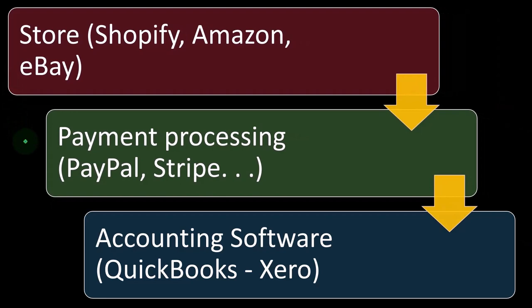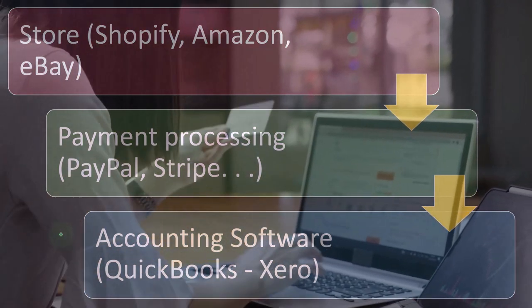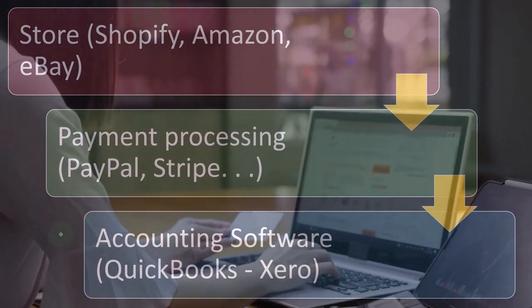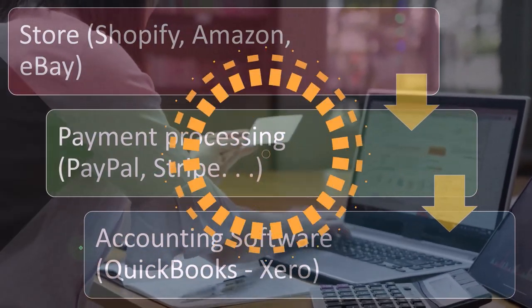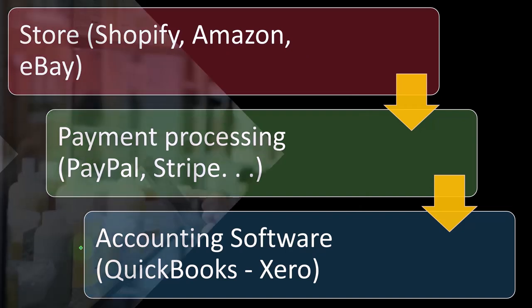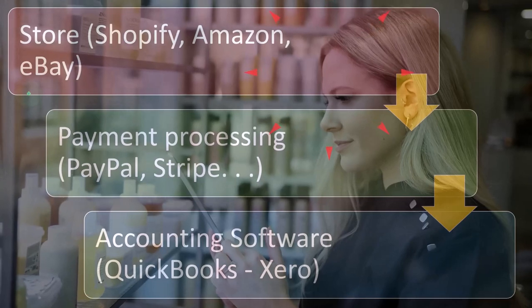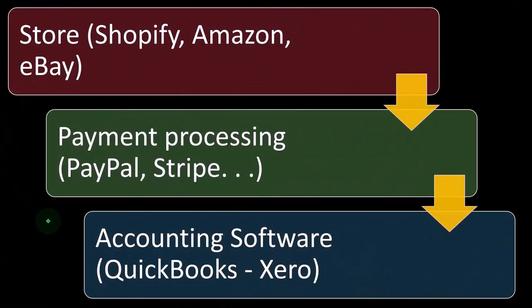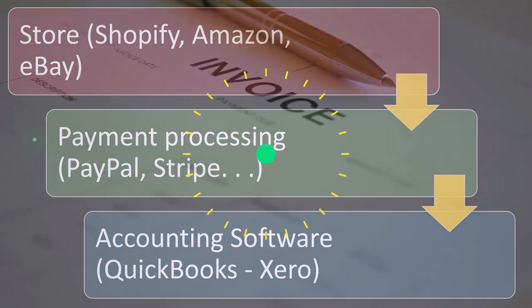You might also have an intermediary like a payment processor such as PayPal or Stripe, and then you've got accounting software like QuickBooks or Xero. The issue is: how can you get this information into the accounting software? With an on-ground store, you'd enter data as you make purchases and sales directly into QuickBooks. But now the sales are being facilitated on the Shopify or Amazon side — they have all the sales records — and you don't want to recreate all those invoices in the accounting software. You want to pull that information in.